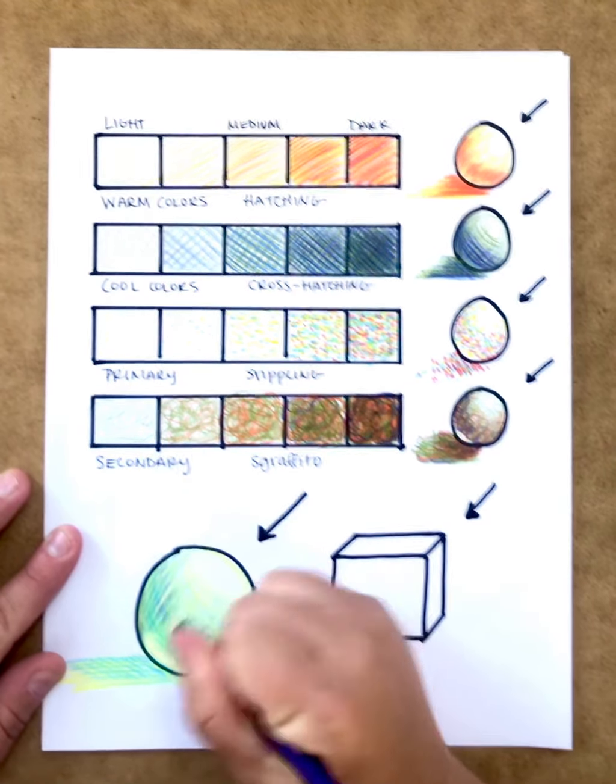And we can add just a little bit of the dark on the sides away from that light source. So that being said, you guys have now learned how to not only blend with color pencils, multiple colors in that blend, and also four different techniques.